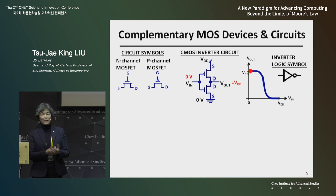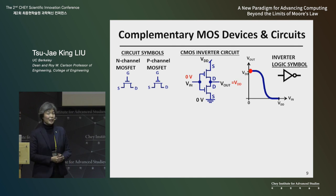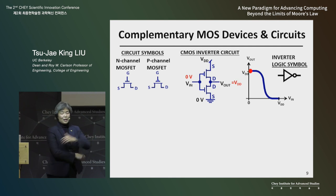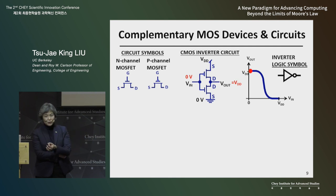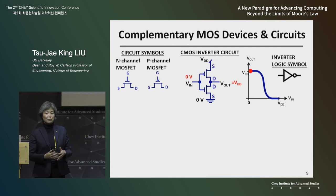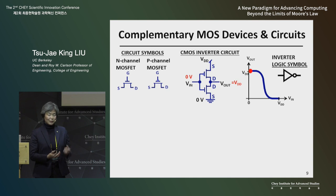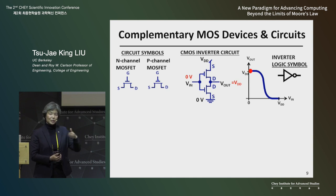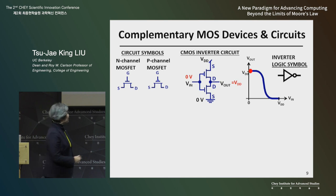Today you might have heard about CMOS technology — complementary MOS. Today's computer chips encode information in digital format. Information is encoded as ones and zeros — high and low voltage. And so transistors...